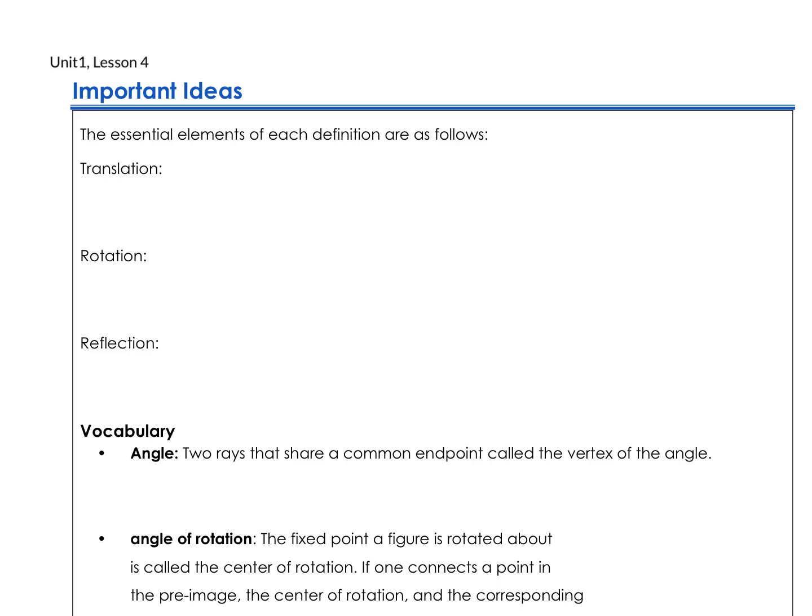Let's take a look at some important ideas from Unit 1, Lesson 4. In this lesson we learned about what it takes to make a good definition — how much we need to be precise, and what kinds of things are not needed because they're extra.